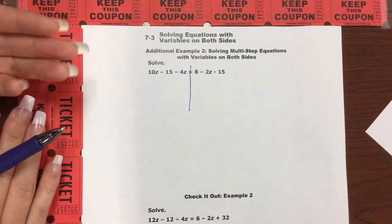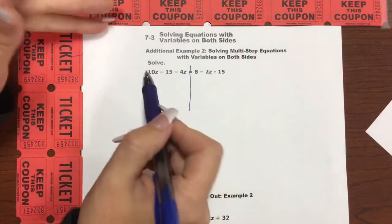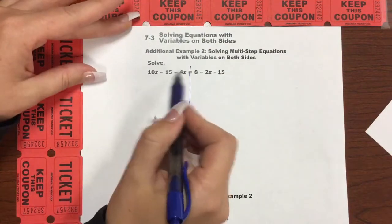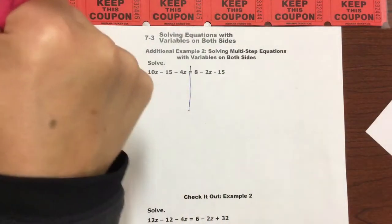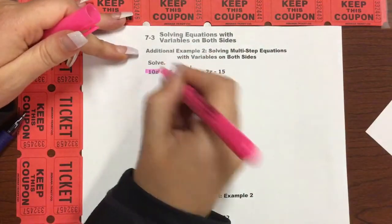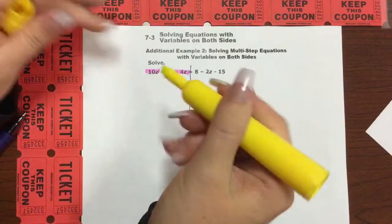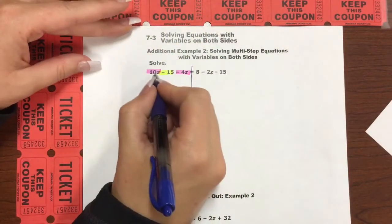Now, this looks like we can simplify things on this particular side of the equation. We have 10z and a negative 4z and then negative 15, which is the constant. So we can simplify these two variables right here, 10z and negative 4z, and then we have our constant right there, negative 15.